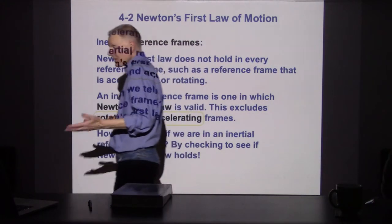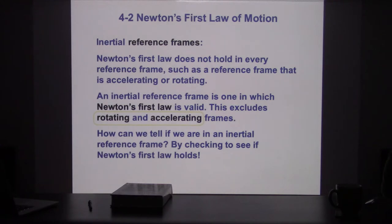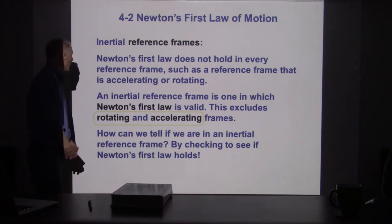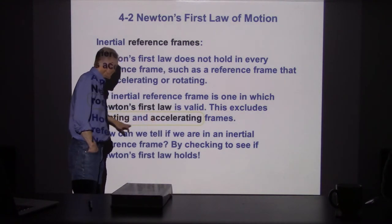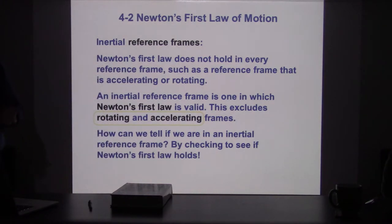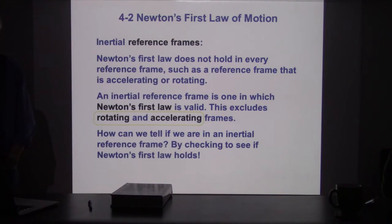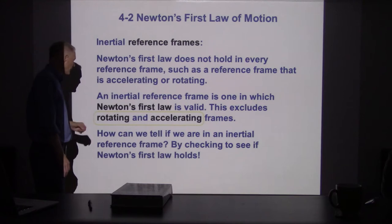Earth's orbital speed is 67,000 miles an hour, but the curvature of the orbit is so small that it's roughly a straight line — we don't feel much effect from that orbital motion. The Earth is a very fast-moving, approximately inertial reference system. But any time we have substantial accelerations, including rotations, those are non-inertial systems. On a rotating platform like a merry-go-round, things behave strangely — if you throw something up, it doesn't come back down to where you are.